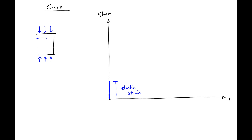What happens next is, as the load is kept on the specimen, it's going to deflect a little more. This is what we call creep strain. And this is going to happen progressively over time.